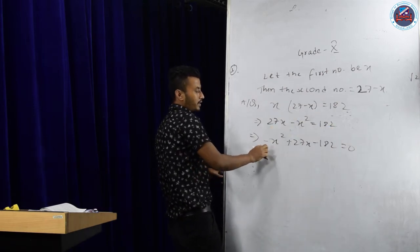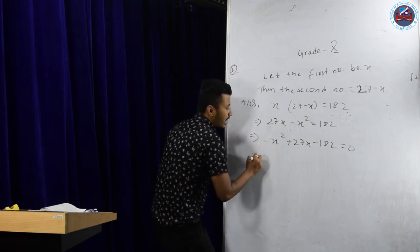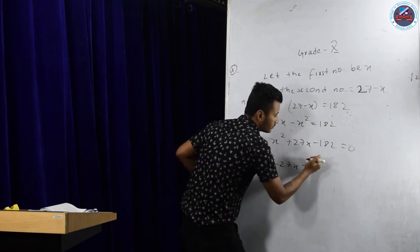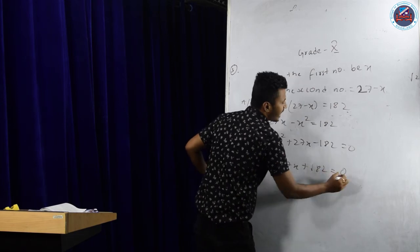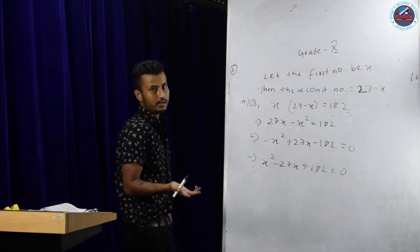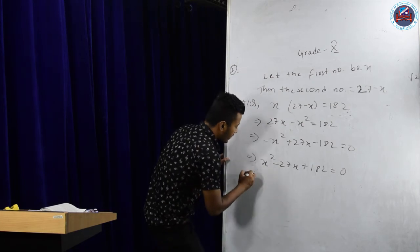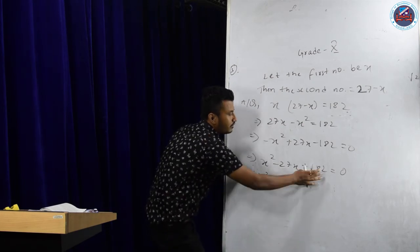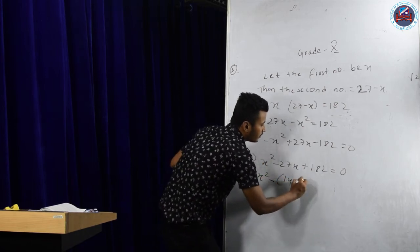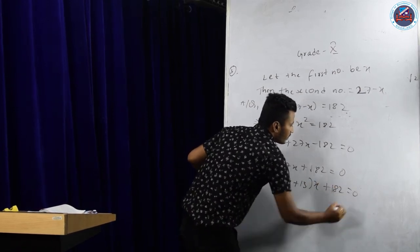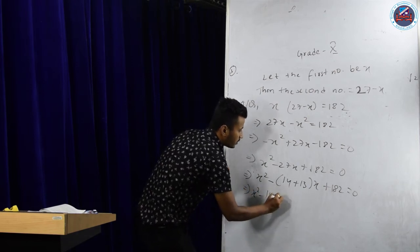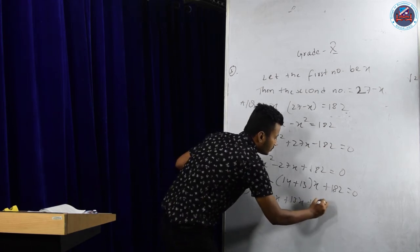It is uncomfortable to work with a negative leading coefficient, so I simply reverse the signs of the entire equation — the right-hand side is zero, so there is no significant change. This gives x² minus 27x plus 182 equals zero. Now applying middle term factorization: multiply 182 by 1 to get 182, then prime factorize it — you will observe you get 14 and 13 (since 14×13=182 and 14+13=27). So this becomes x² minus 14x minus 13x plus 182 equals zero.